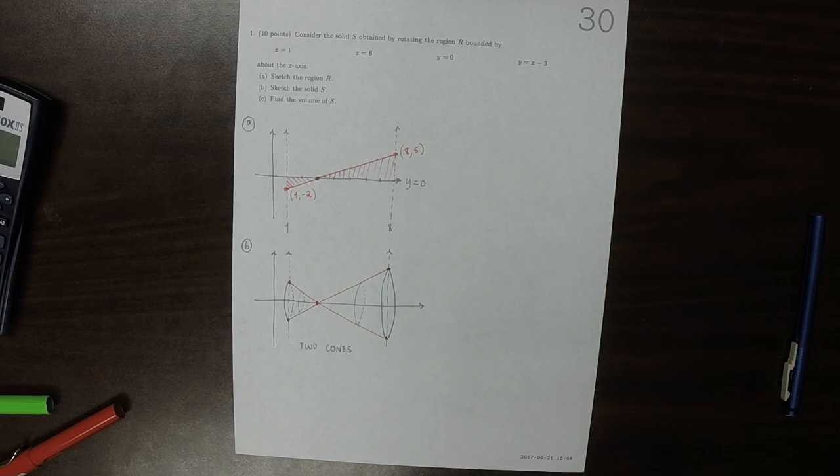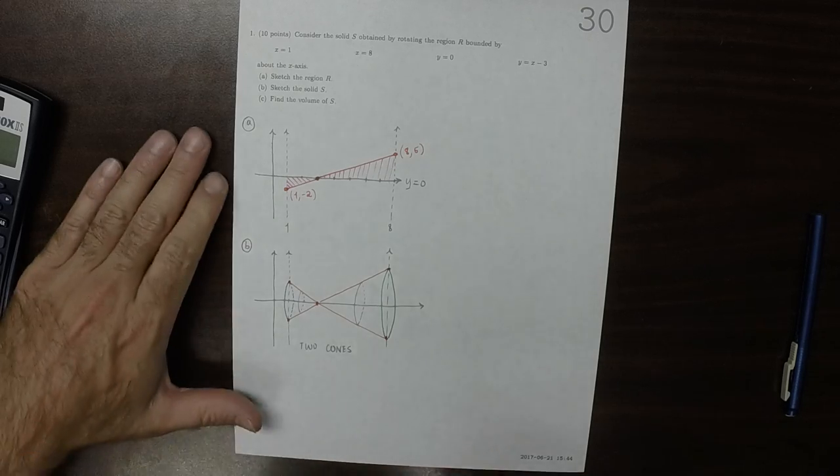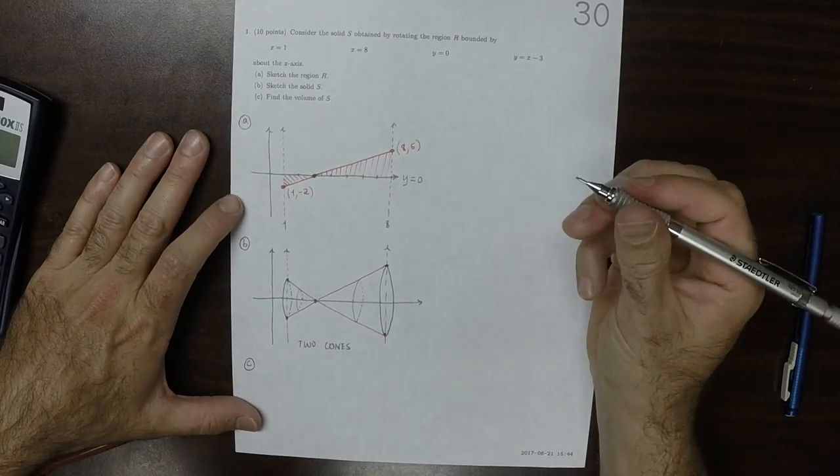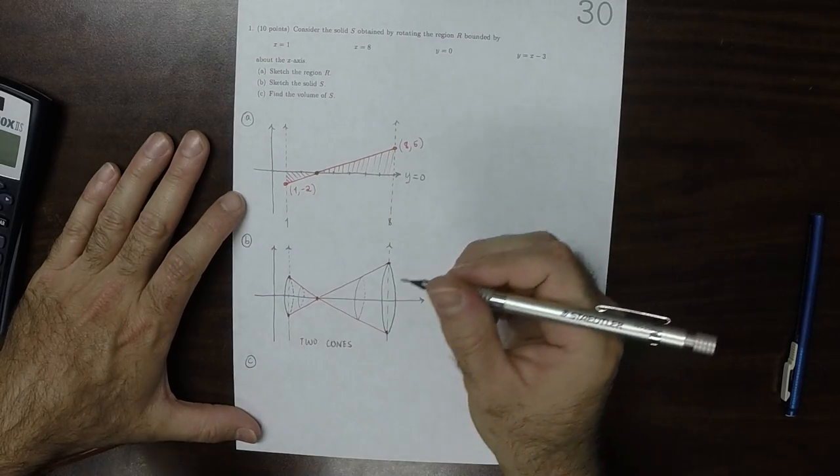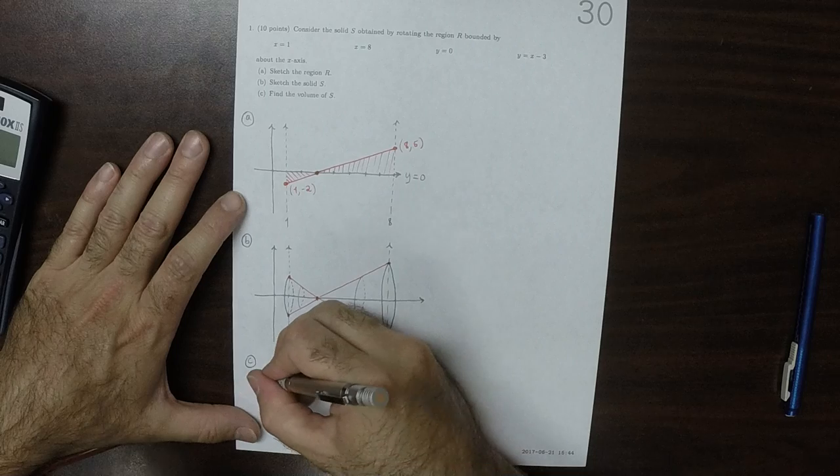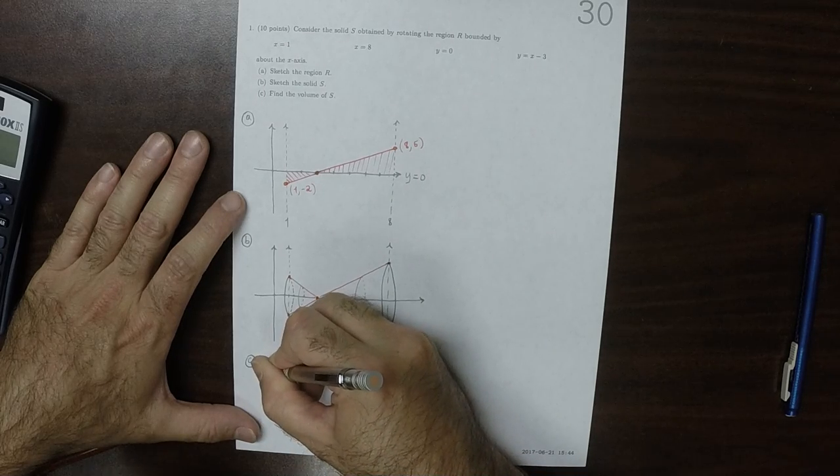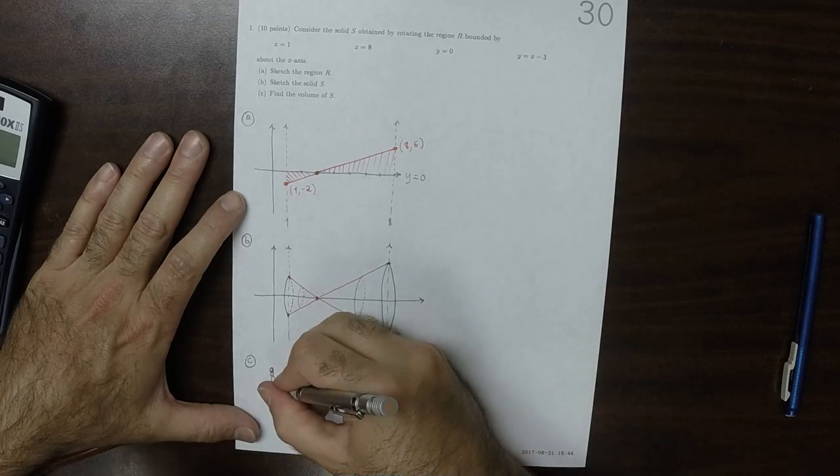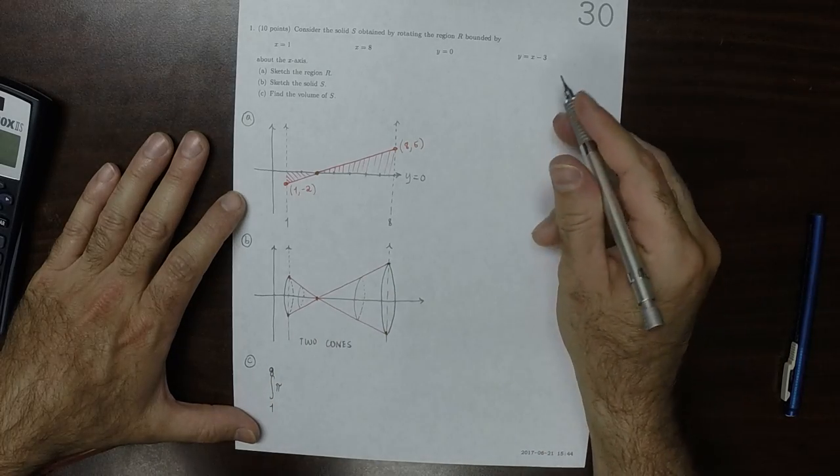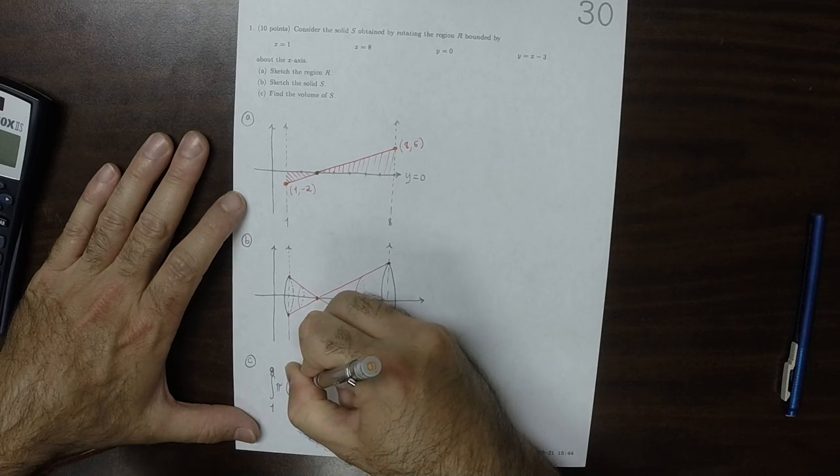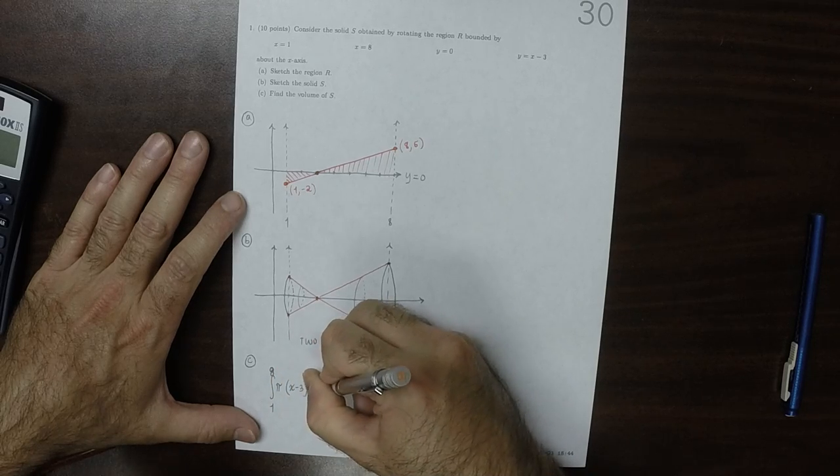Well, we want to compute the volume of these. So on the one hand, part c, the volume can be computed as the integral from one to eight of pi times the radius x minus 3 squared dx.